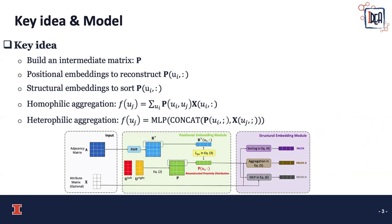The key idea of our model is as follows: we build an intermediate matrix P, use the latent Positional Embedding to reconstruct the P matrix, and then the Structure Embedding is generated by sorting the P matrix for each row. In addition, we propose two different aggregation mechanisms — homophilic aggregation and heterophilic aggregation — and here is our framework.